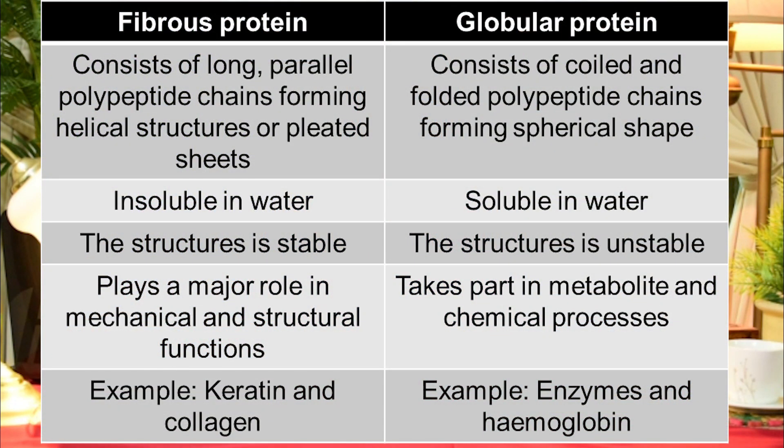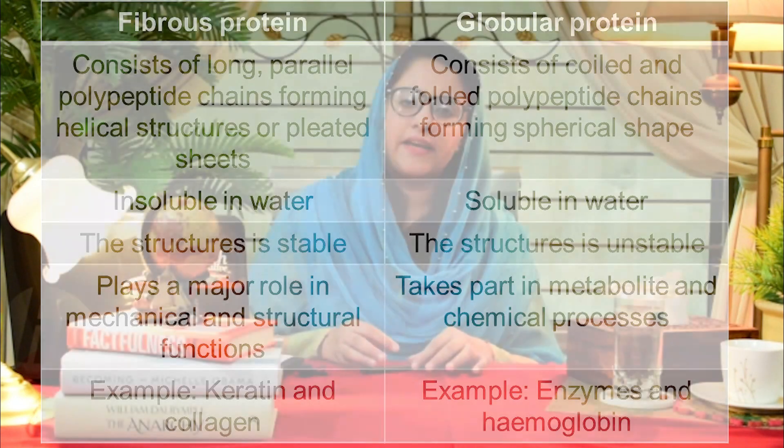In globular proteins, many examples include different enzymes and hemoglobin. They are very sensitive — if there is any pH change or temperature change, their structure is affected. These proteins are soluble in water and have tertiary and ellipsoidal structures.